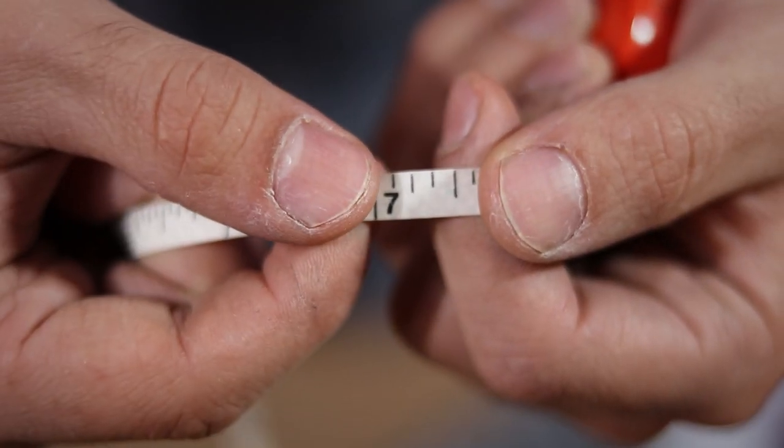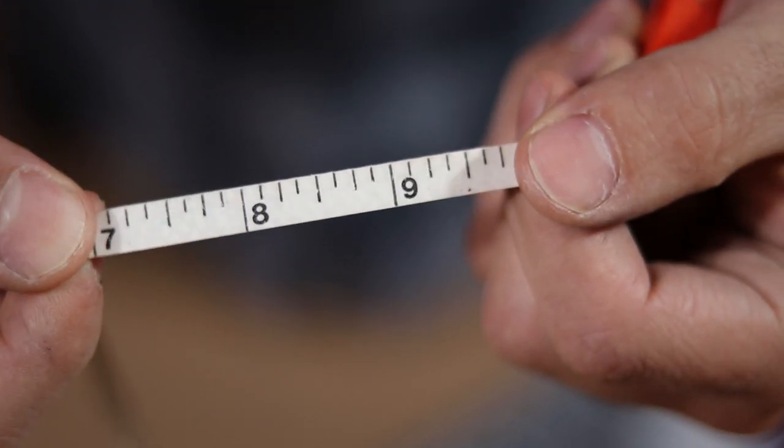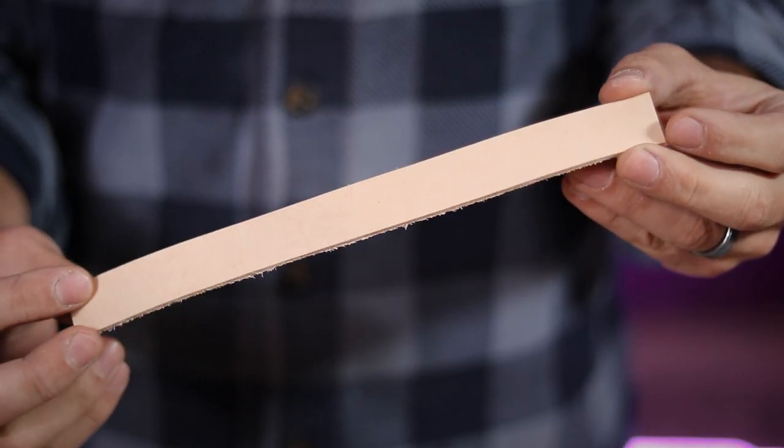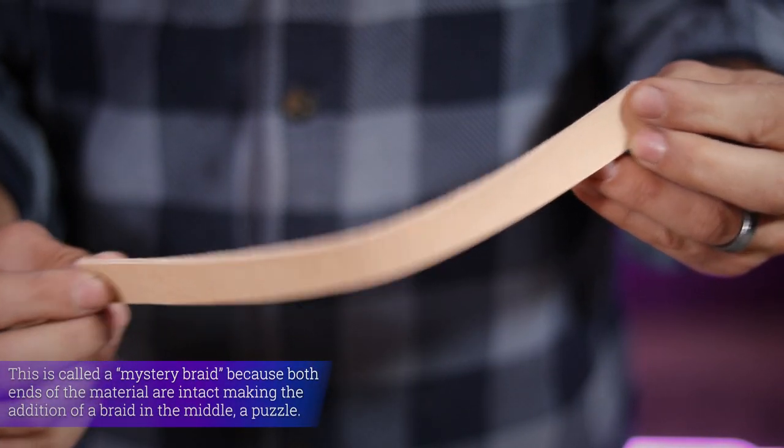Now you're going to want to add an extra two inches to your measurement to account for any snaps or closures you're going to want to use. With that in mind, I cut a three quarter inch strap of leather at nine inches long.